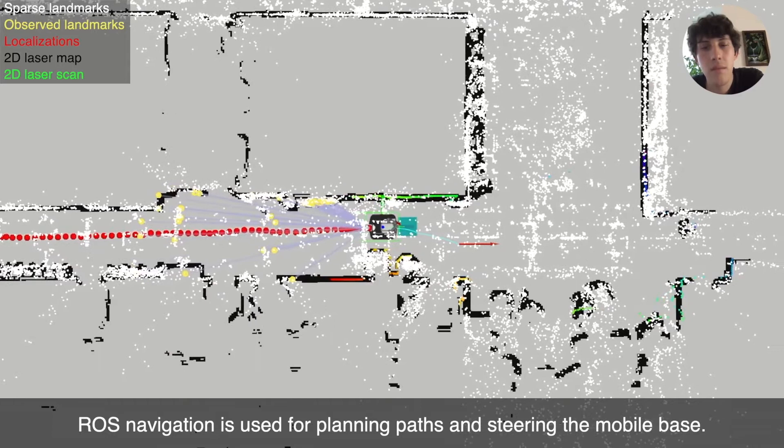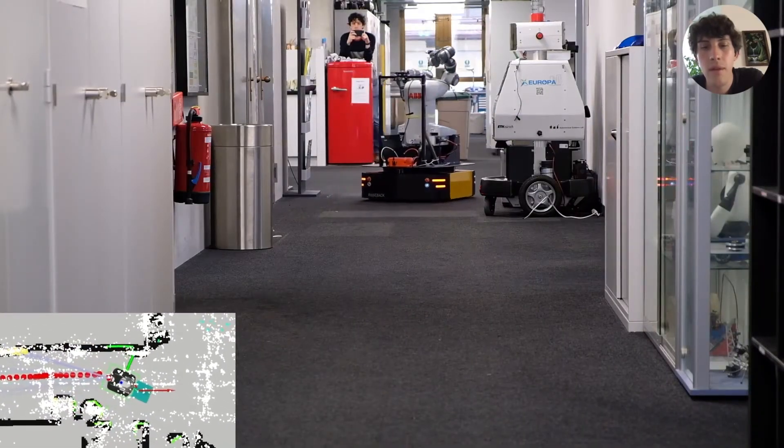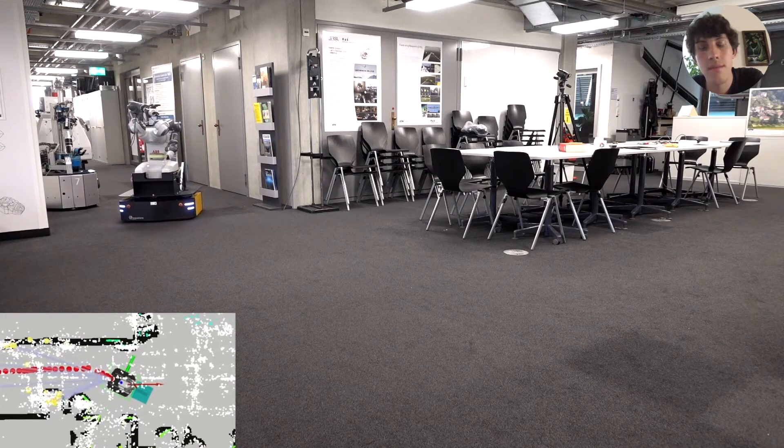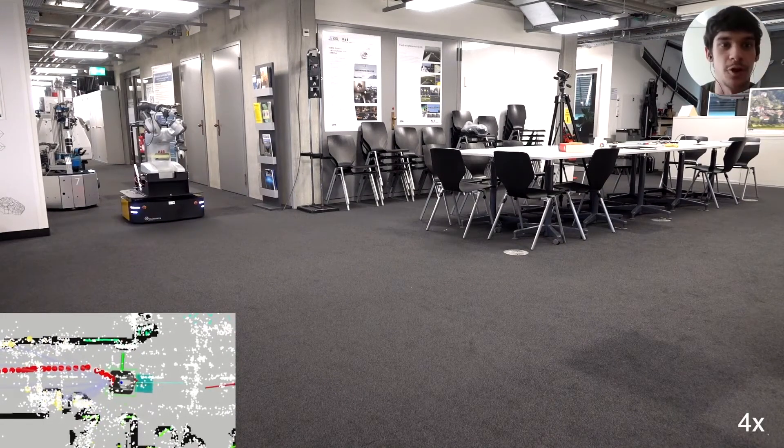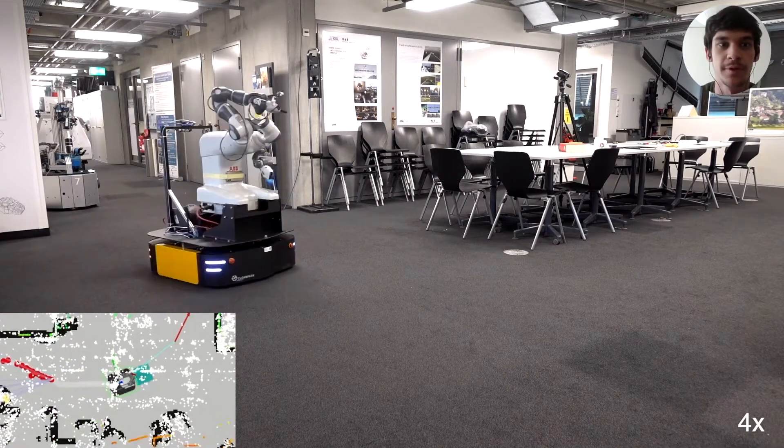The localization is used by ROS navigation stack to perform navigation and obstacle avoidance. In a first stage, the robot follows predefined waypoints while keeping an eye open for the target object.